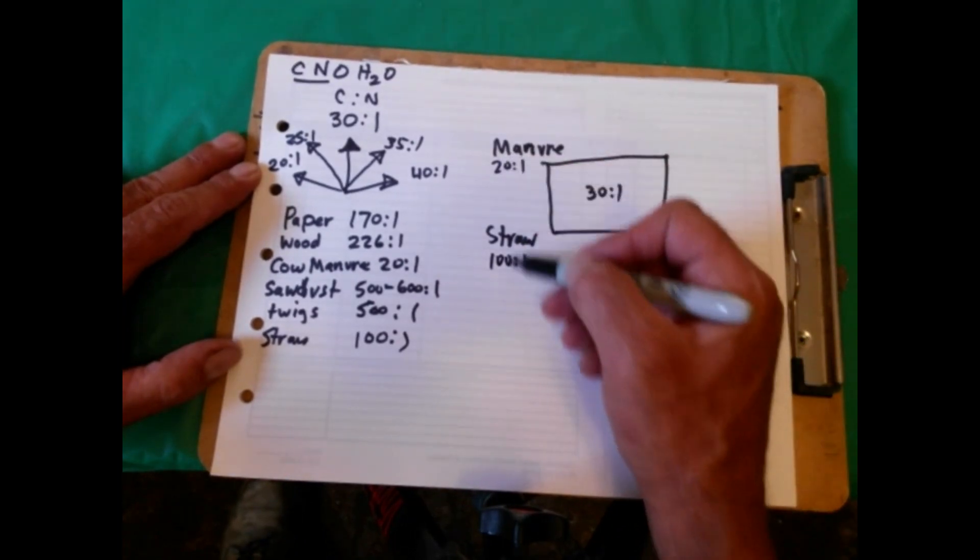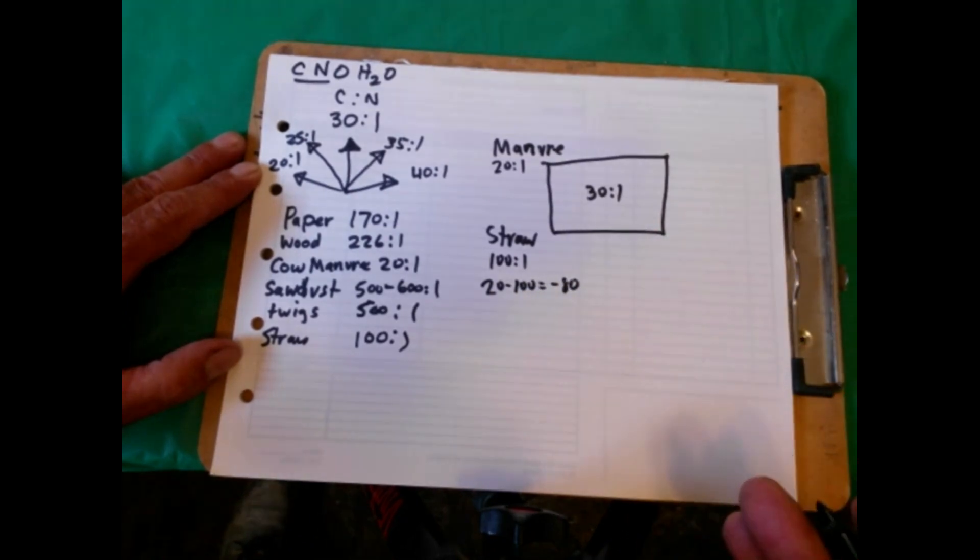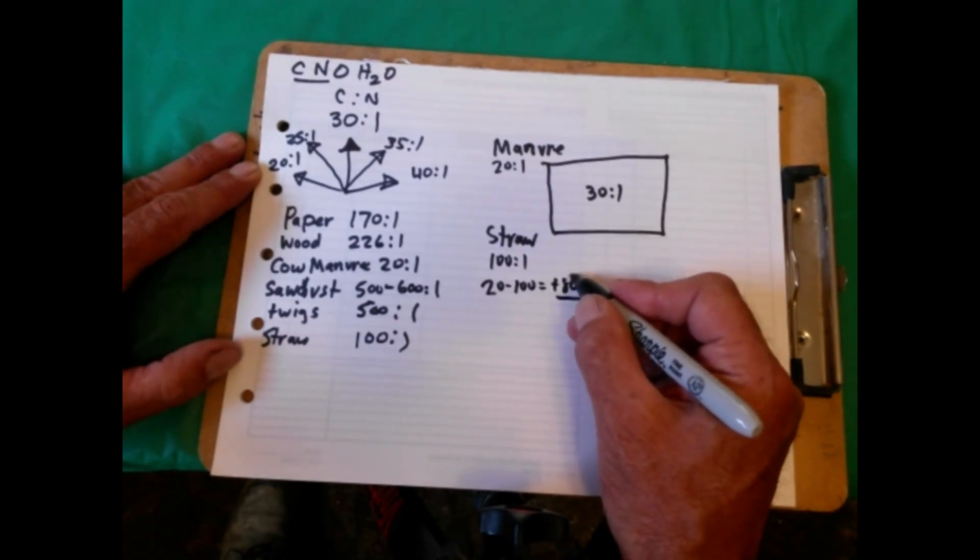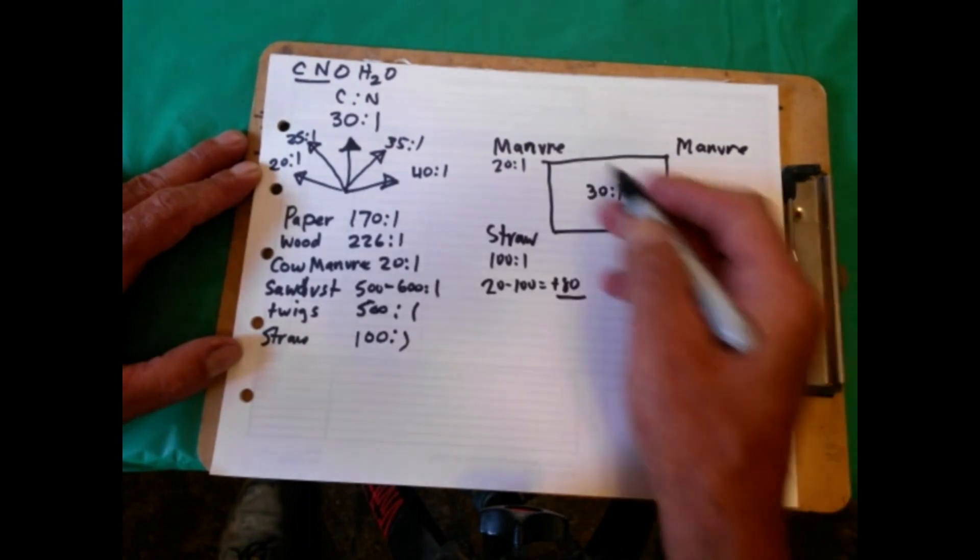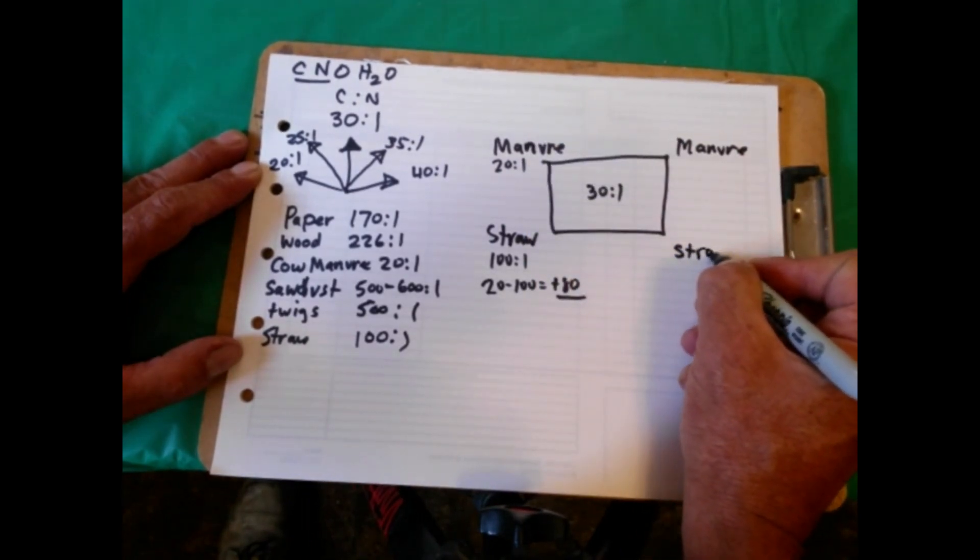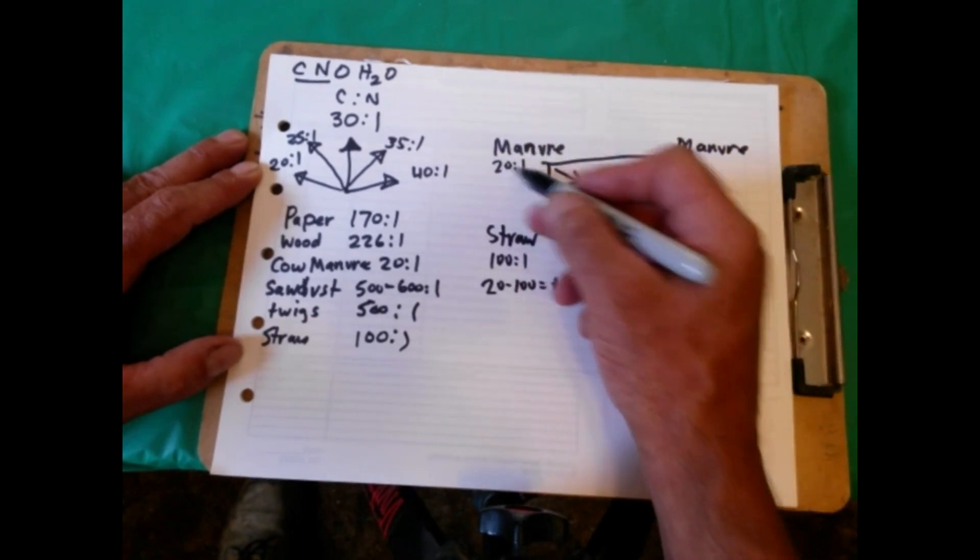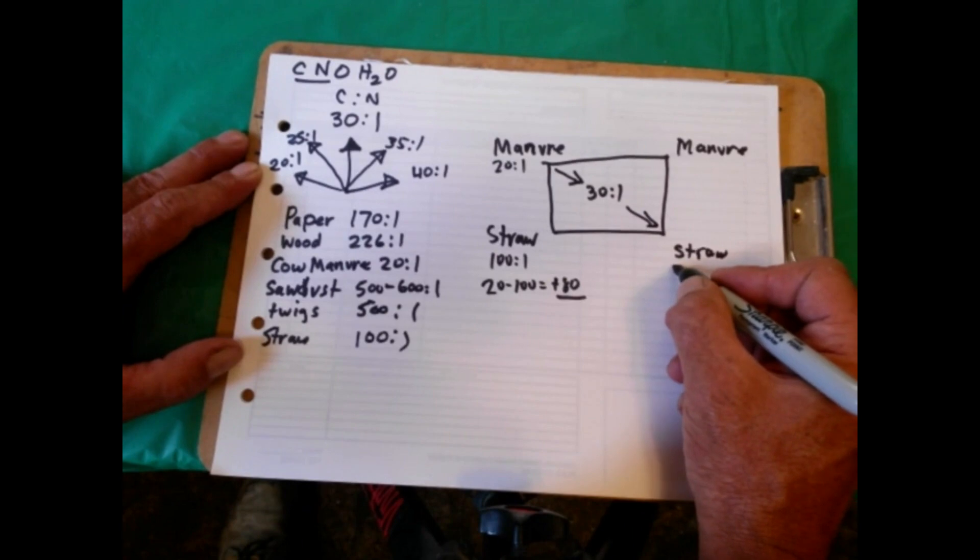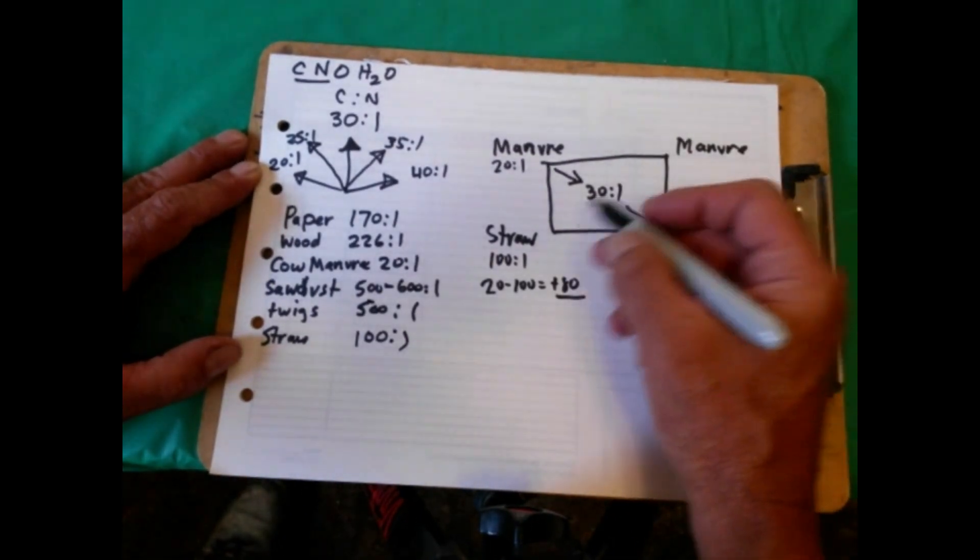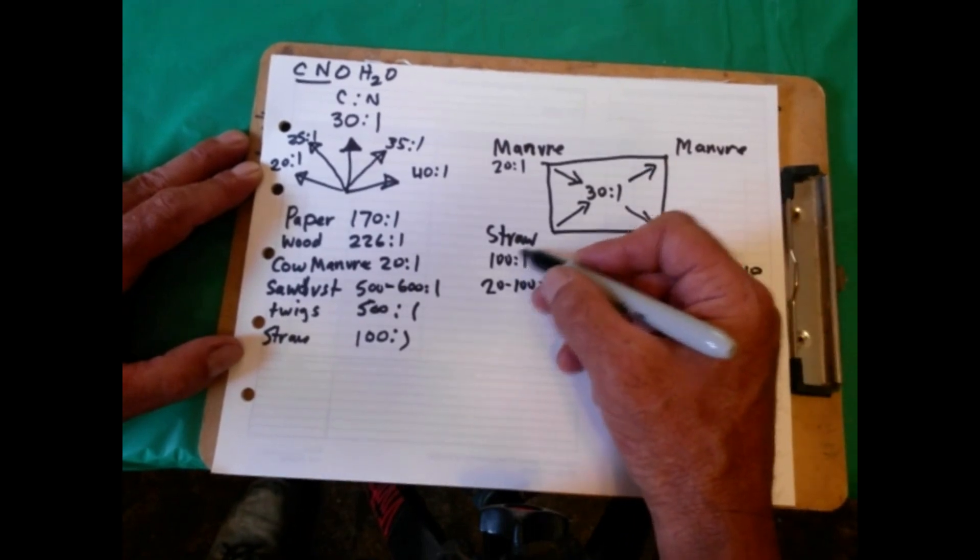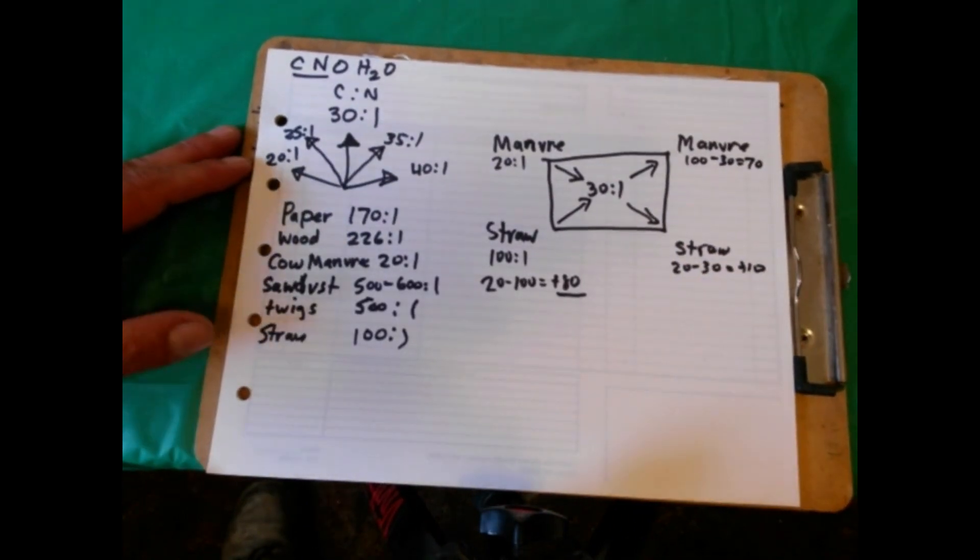The first thing you have to do is subtract these two. So we get 20 minus 100 is negative 80. If you get a negative number, just make it positive. This number is important, this 80. Over here, this is your manure side. This is going to tell you how much manure, and this is going to tell you how much straw we need in our final mixture. So what you do is you go this way.